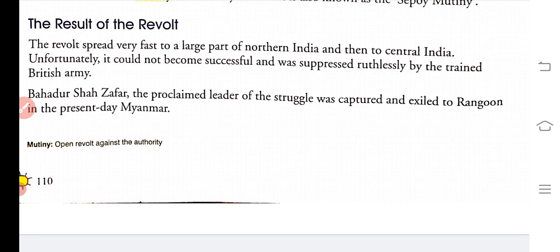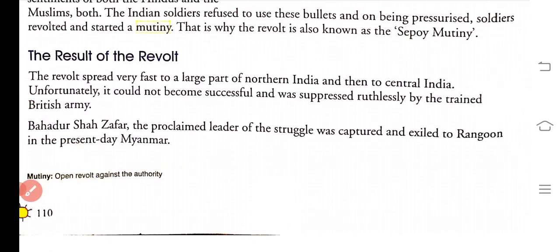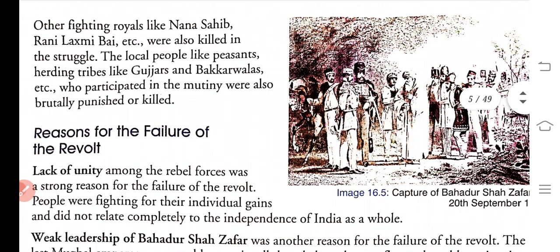The revolt did not become successful and was suppressed by the trained British army. The Indians were not sufficiently trained or equipped. Bahadur Shah Zafar was a weak leader and that is why many efforts got destroyed.